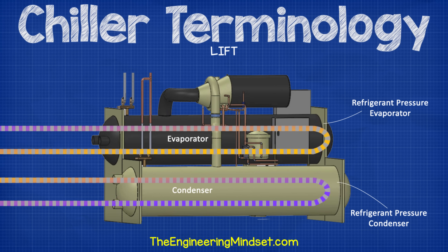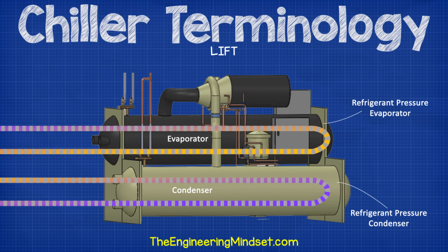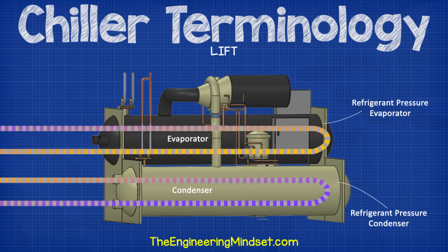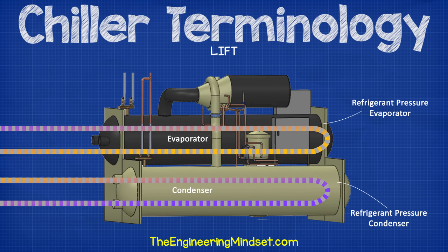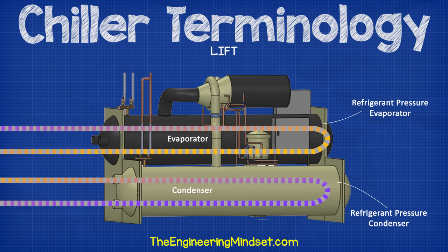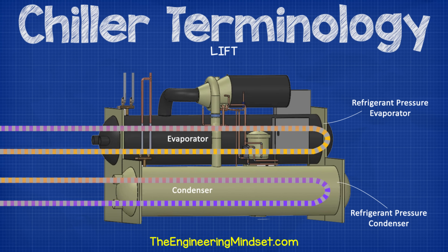Lift. Lift refers to the difference in pressure between the refrigerant in the condenser and the refrigerant in the evaporator. The higher the difference, the more work the compressor is having to do in order to achieve this. The chilled and condenser water temperatures and the approach temperatures set the required lift. Reducing the condenser water set point and increasing the chilled water set point will reduce the energy consumption of the compressor.